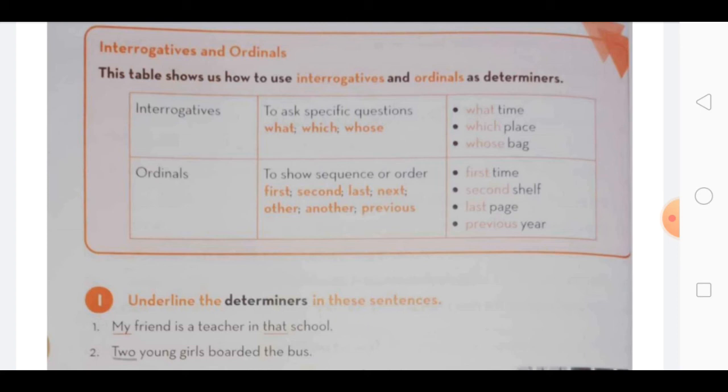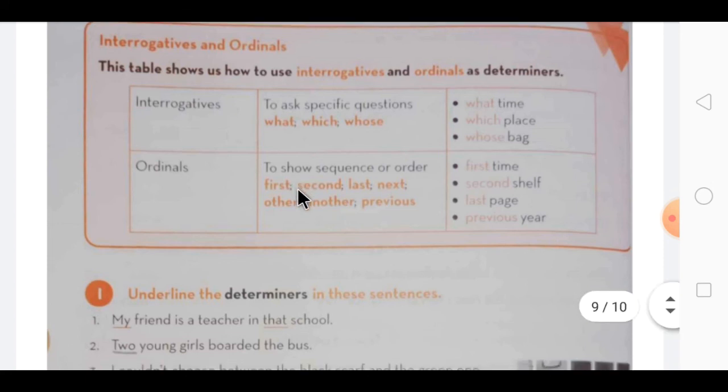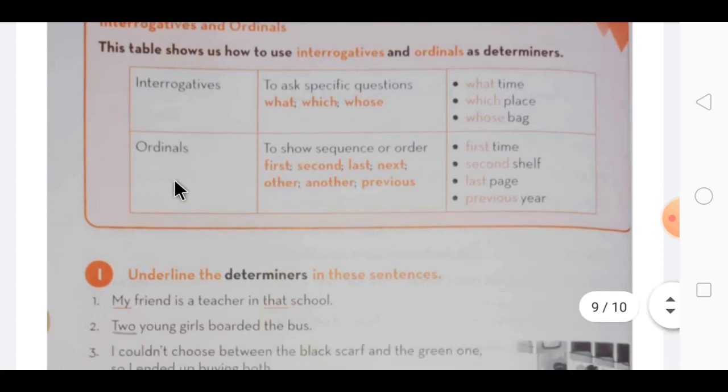Then next comes ordinals. What are called ordinals? In this there are two types - cardinal and ordinal. Cardinal means which specifies the number - one, two, three, four. Or ordinal means first, second, third, like that. Or last, next, other, another, previous. All these words which are used, which show sequence, show order, are called ordinals.